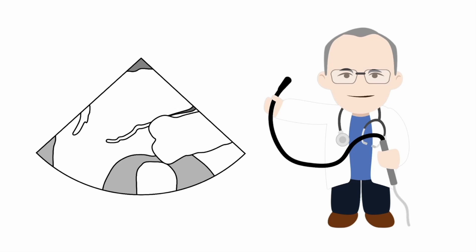In this lesson, we're going to learn how to assess the aorta in the mid-esophageal long-axis aortic root view. In this view, we can see the aortic root towards the right-hand side of the screen. We can see the aortic valve and the aortic root at the level of the aortic annulus, sinuses of Valsalva, sinotubular junction, and the proximal tubular ascending aorta. Other nearby structures include the left atrium, the mitral valve, anterior leaflet and posterior leaflet, the left ventricle, and a portion of the right ventricle.